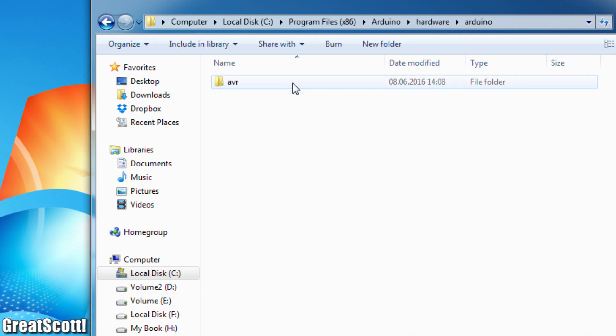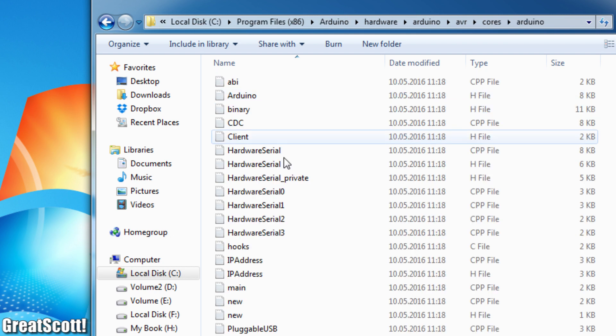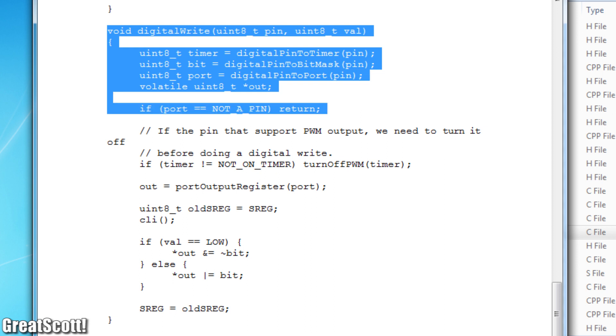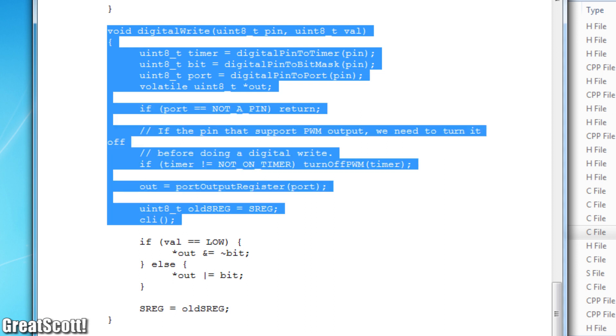Now the reason for the slow digital write function can be found by opening the wiring digital file which presents us all the commands that take place while executing the function, which obviously slows it down.